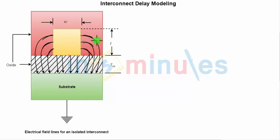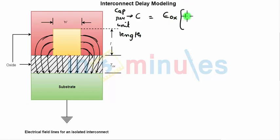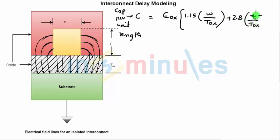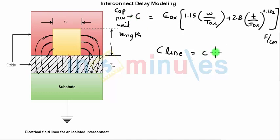Taking fringing capacitance into consideration, the capacitance per unit length is derived from an empirical equation — there is no formal derivation. It is given by: small c = permittivity of oxide × [1.15 × (W / TOX) + 2.8 × (T / TOX)^0.22], in units of Farads per centimeter. C_line is then capacitance per unit length times length: C_line = small c × L, in Farads.